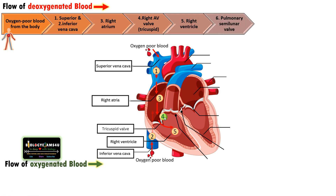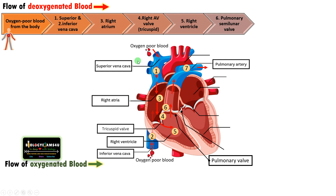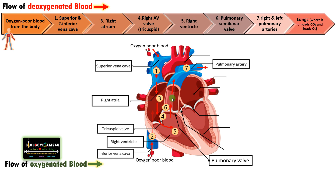From the right ventricle, blood moves through this pulmonary semilunar valve into the pulmonary artery. This pulmonary valve prevents the back flow from the pulmonary artery to the right ventricle. Once the blood reaches the right and left pulmonary arteries, it is transported to the lungs for oxygenation, where it unloads carbon dioxide and loads oxygen.